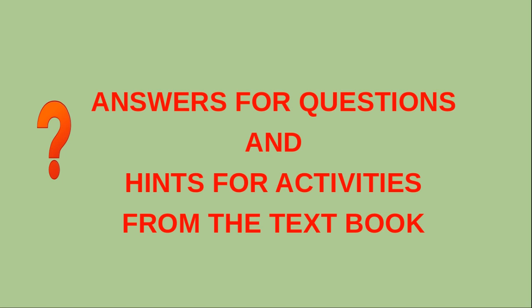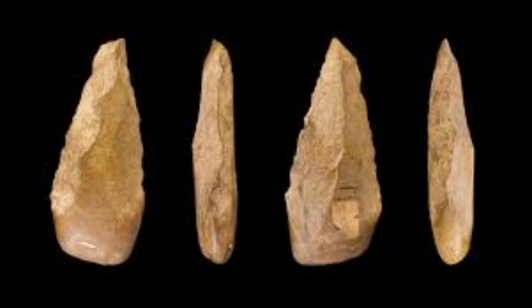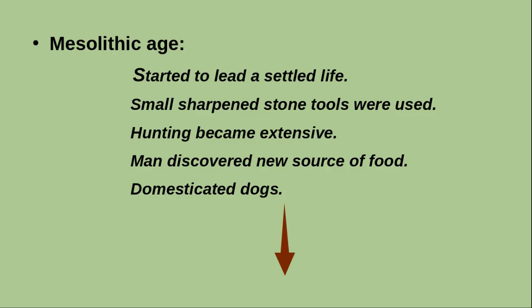Some questions and activities are given in the textbook. The first activity is to prepare a flowchart depicting the progress of human beings from food gatherers to food producers. In the Paleolithic period, they led a nomadic life and used rough natural stones. Food was collected through hunting and food collection. In the Mesolithic period, they started to live a more settled life, used small sharpened stone tools, and hunting became extensive. Man discovered new sources of food and domesticated dogs.